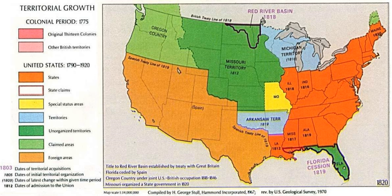Five congressmen in Maine were opposed to spreading slavery into new territories. Dr. Brian Purnell, professor of Africana Studies and U.S. History at Bowdoin College, writes in Portland Magazine that Martin Kinsley, Joshua Cushman, Ezekiel Whitman, Enoch Lincoln, and James Parker wanted to prohibit slavery's spread into new territories. In 1820, they voted against the Missouri Compromise and against Maine's independence.